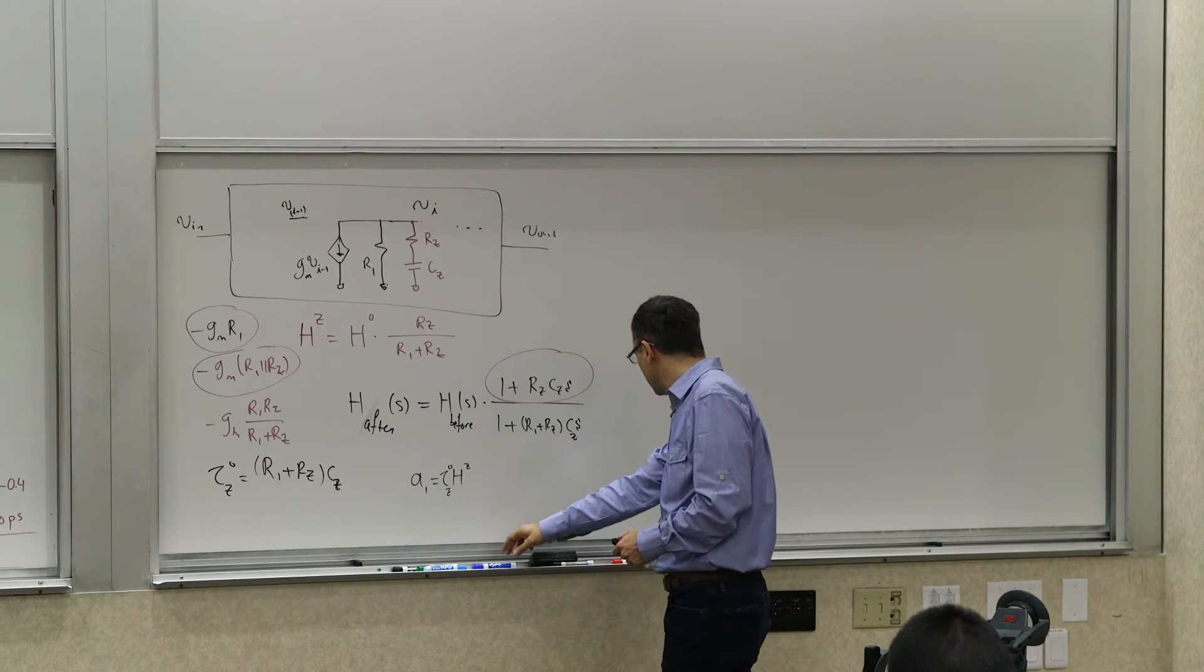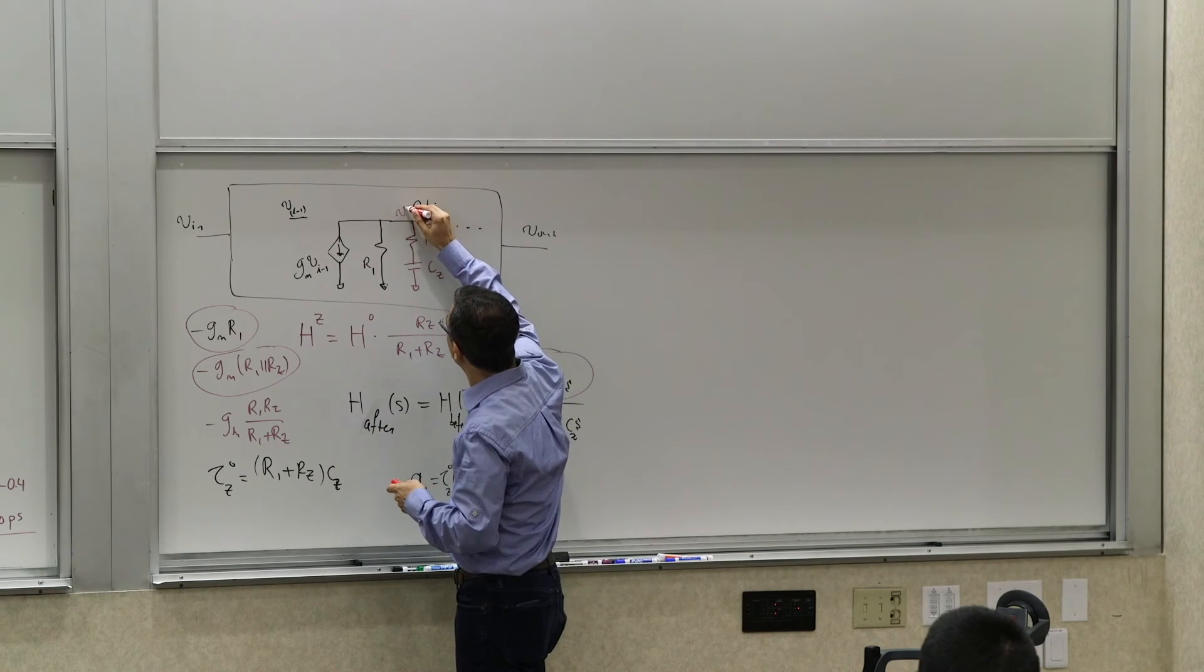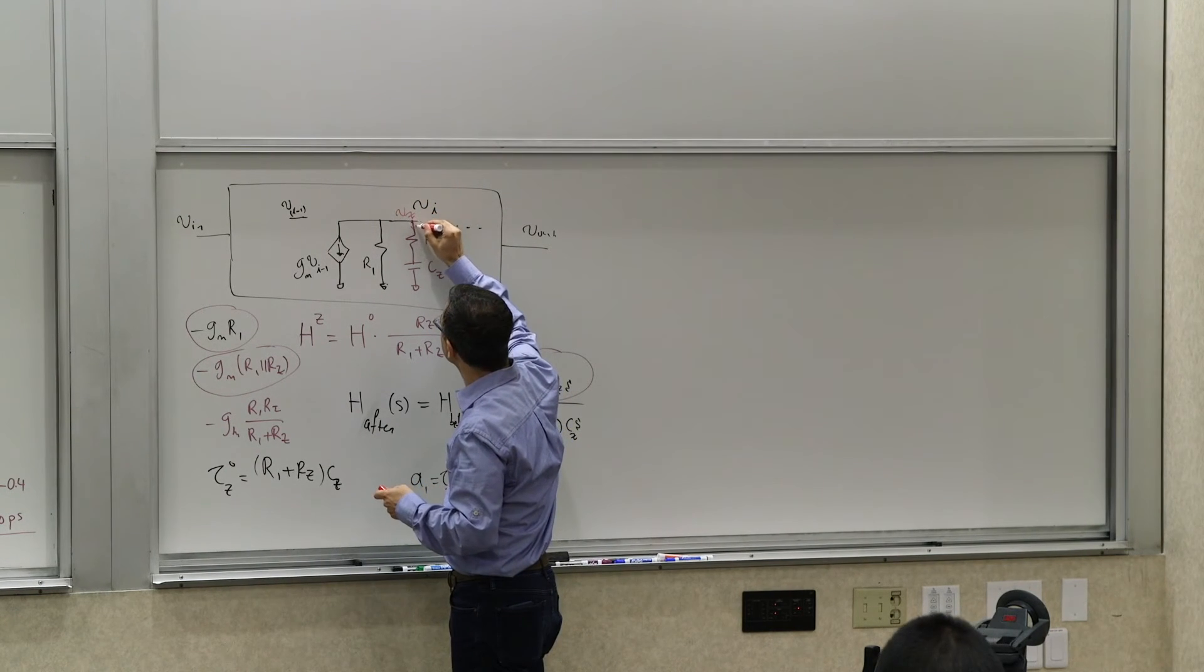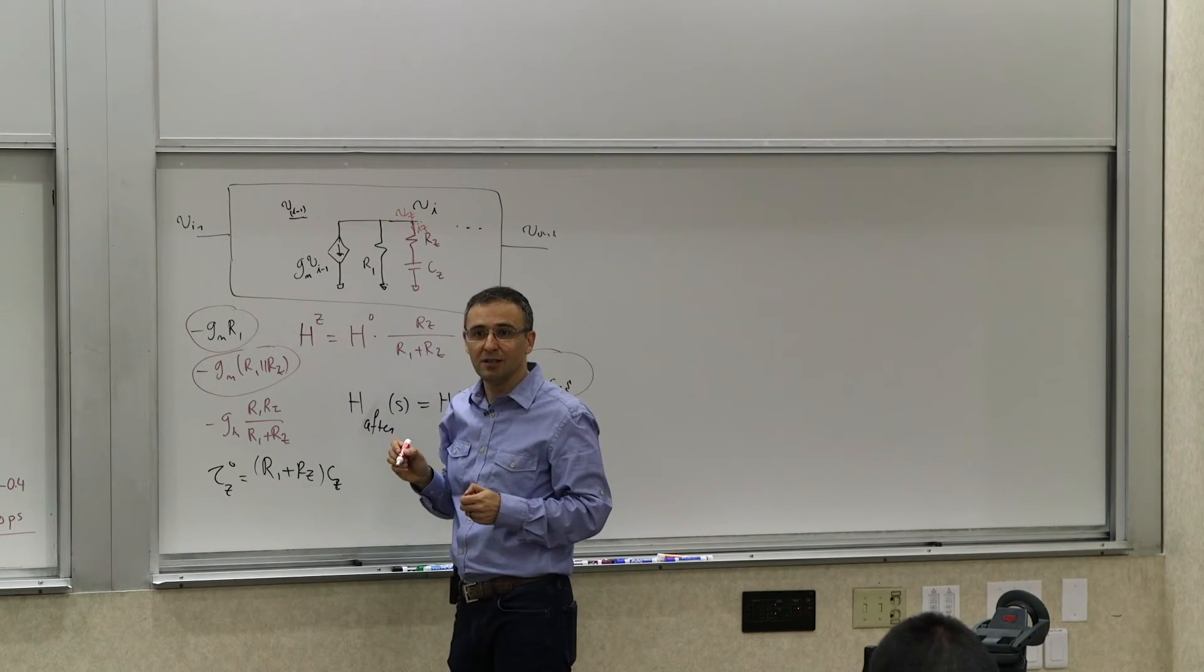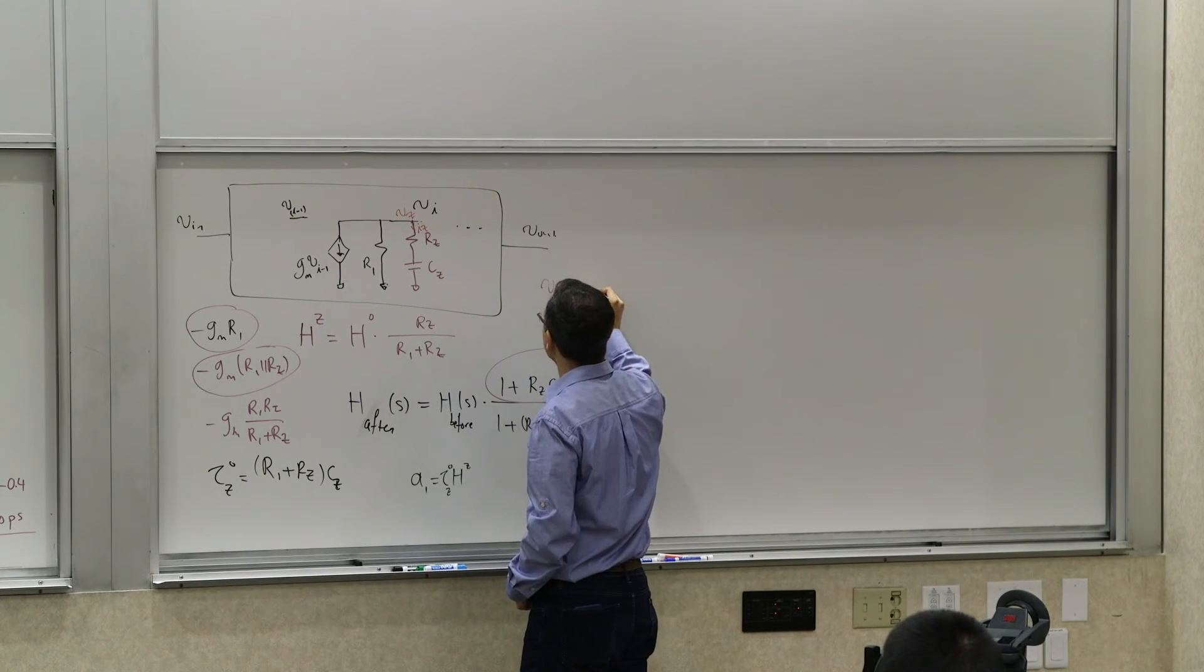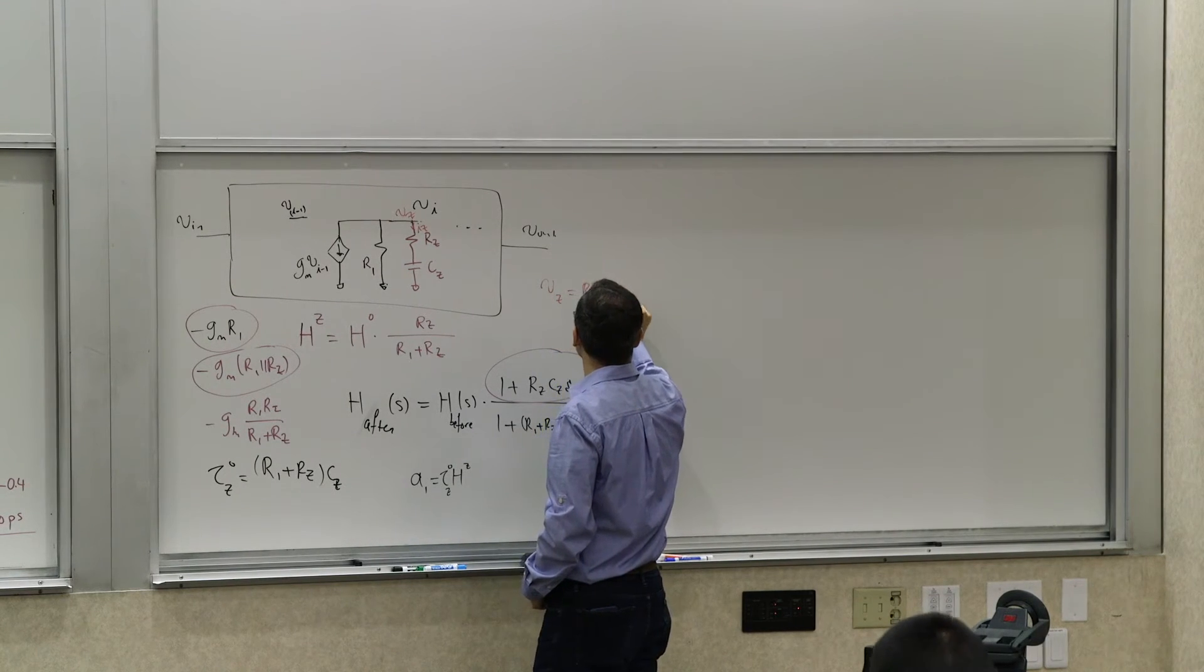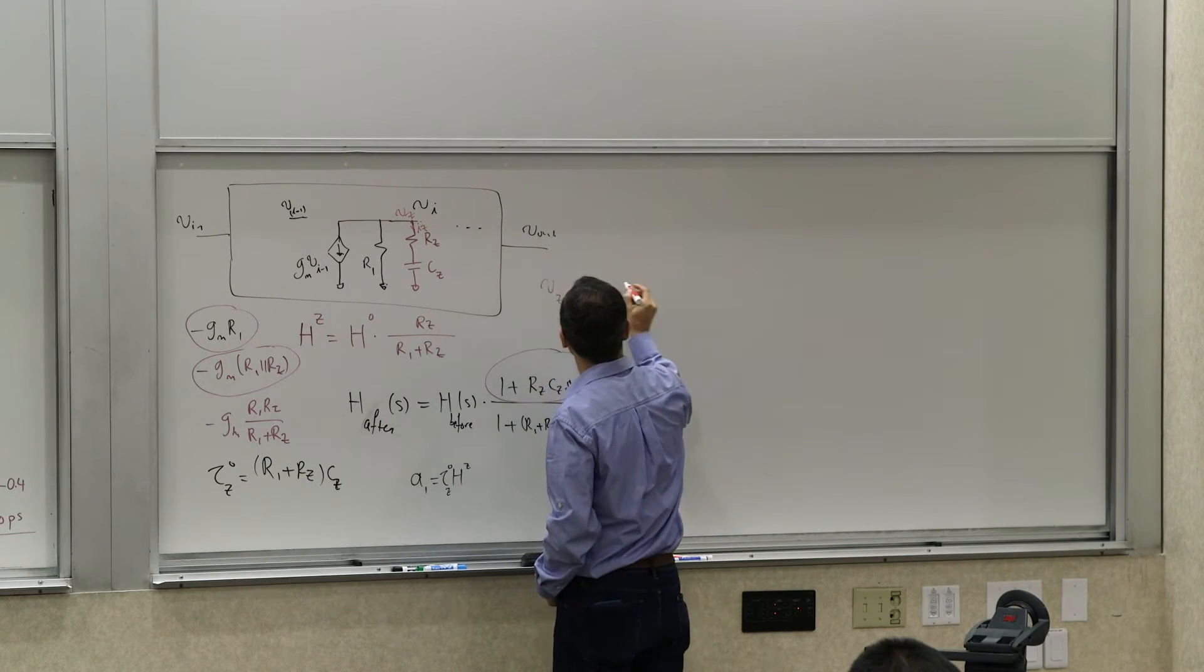Now, there's another way to see this. Perhaps simpler. Is that if I define this as this voltage as Vz and this current as Iz, right?